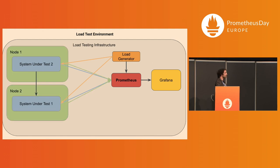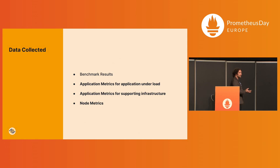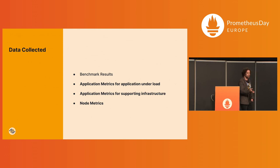To get a little bit more complicated, if you are running these systems on two nodes, that's also fine, and you could get additional node metrics using a node exporter, also sending data to Prometheus. So now in your benchmarking setup, in addition to the traditional benchmarking results you would get from your load generator or from a measurement tool, you also get application metrics for the application and the load, application metrics for other applications in your setup, as well as node metrics.